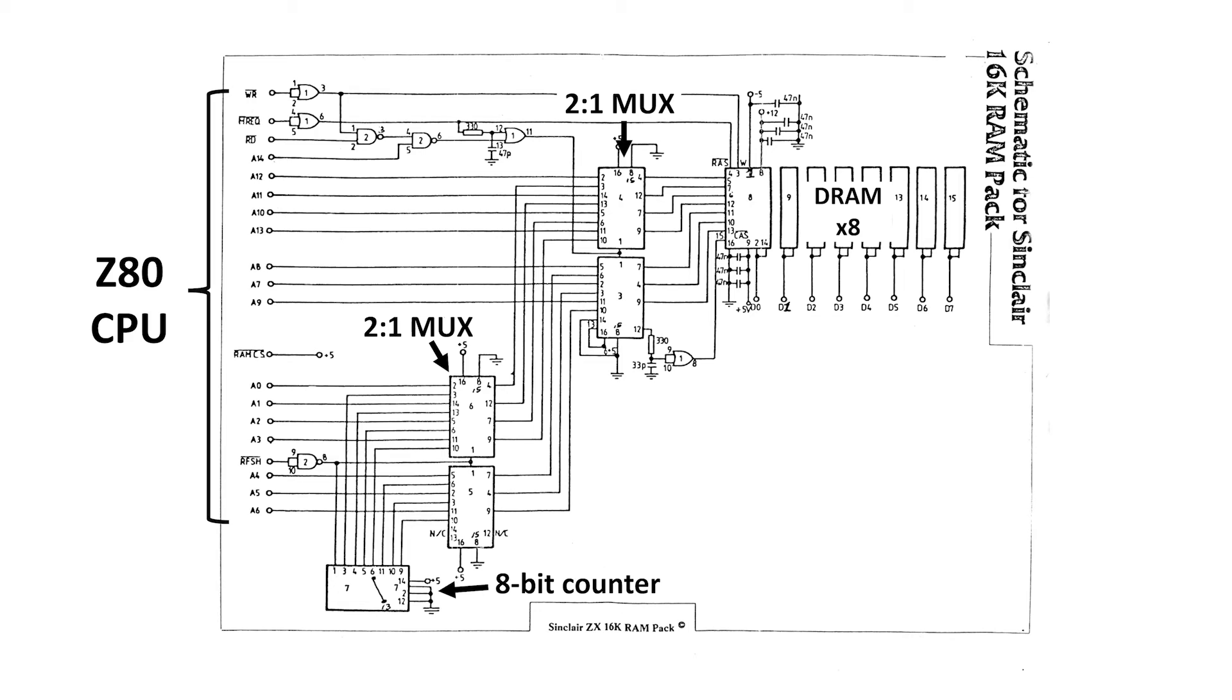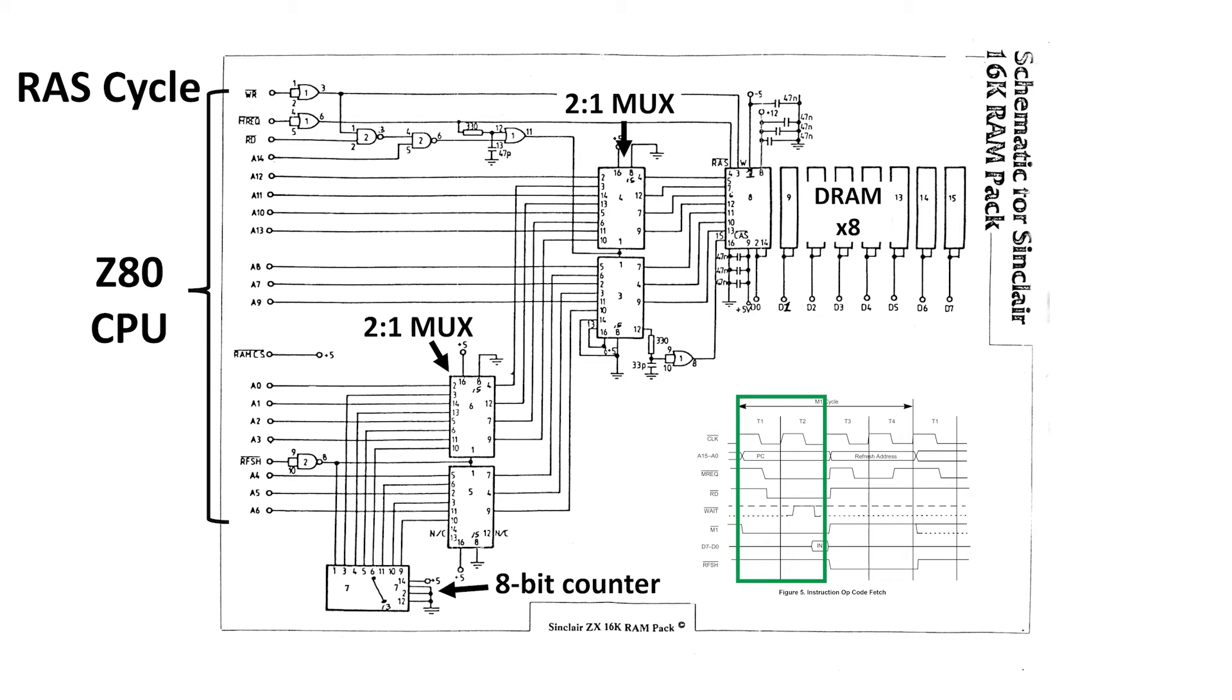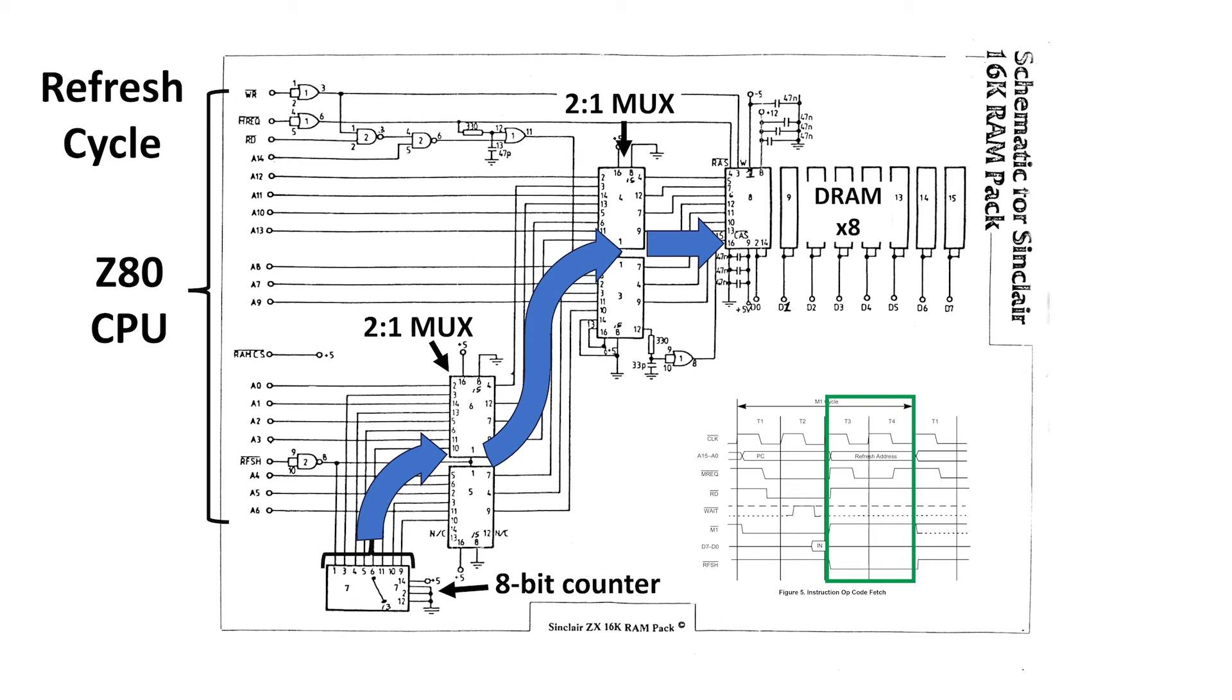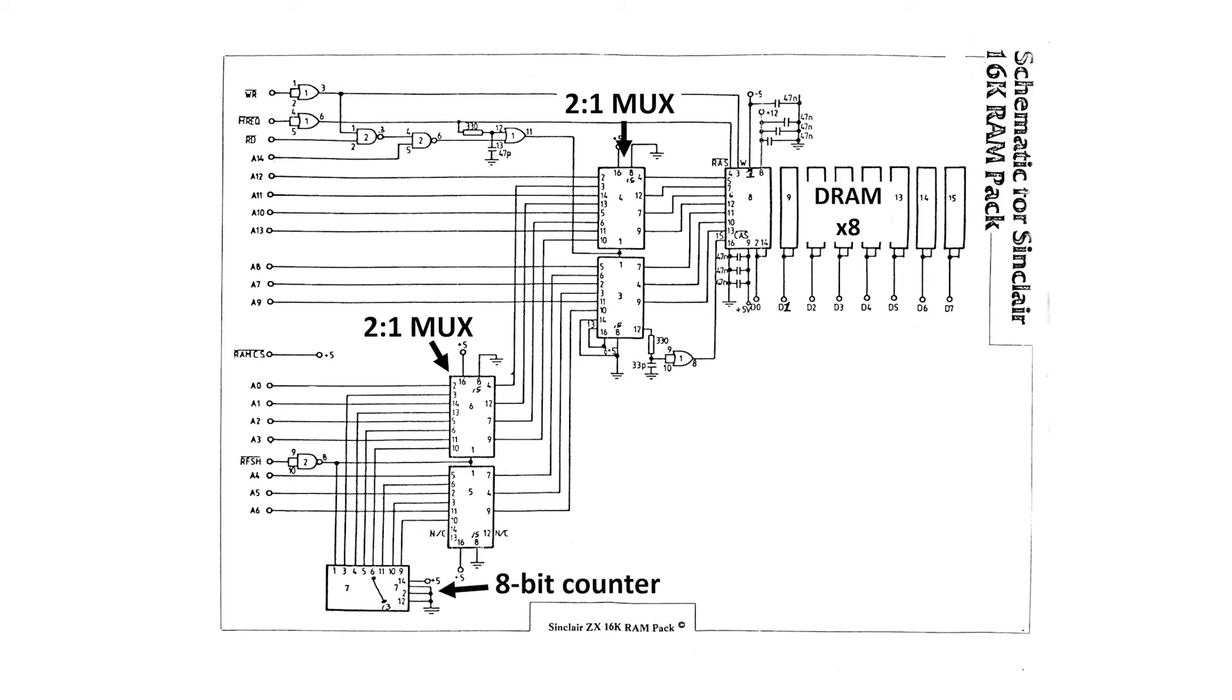Let's see how it works. During the RAS cycle of a main memory read or write, the multiplexers are configured so that address bits A0 through A6 of the Z80 go through to the DRAM chips. During CAS, address lines A7 through A13 go through. But during refresh, the output from the 8-bit external refresh counter goes through to the DRAM and provides the refresh row address. Just like the internal refresh counter, this counter is clocked by the Z80 refresh bar signal.